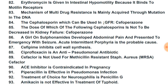A girl on sulfonamides who developed abdominal pain and presented with seizures — acute intermittent porphyria is a probable cause, as sulfonamides can precipitate it. Cephalosporins inhibit cell wall synthesis. Ciprofloxacin is an anti-pseudomonal antibiotic. Cephalosporins are not used for methicillin-resistant Staphylococcus aureus (MRSA) — vancomycin is used for MRSA.